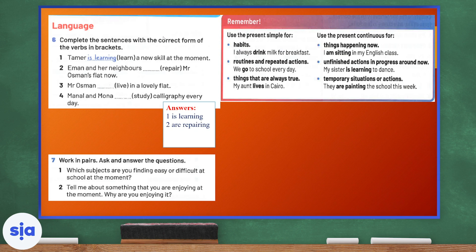Number three, Mr. Osman live in a lovely flat. Mr. Osman lives in a lovely flat. This is in the present simple. Manel and Mona study calligraphy every day. If they do this every day, then it's a habit, then we will use study in the present simple. Now, let's jump to exercise seven. Work in pairs to ask and answer questions. Which subjects are you finding easy or difficult at school right now? Share your answer with a partner. Which subject is easy and which subject is not easy for you? And tell your friend. Tell me about something that you're enjoying at the moment. Are you enjoying it? Yes or no? And why?